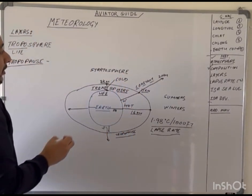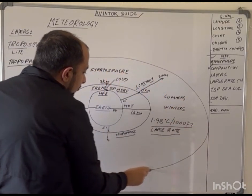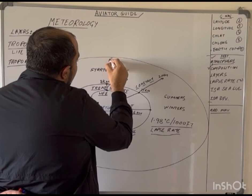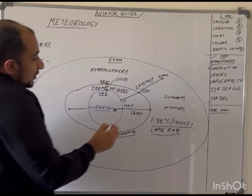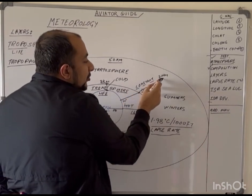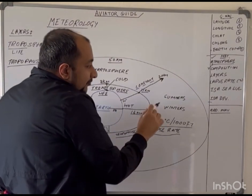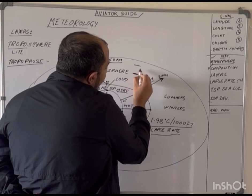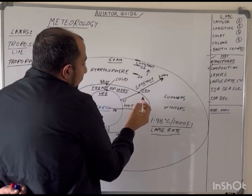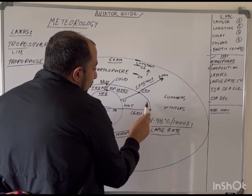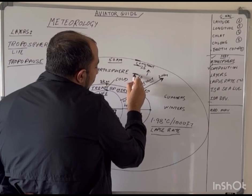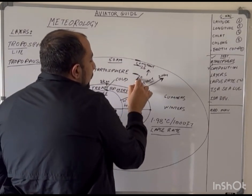Flying happens mostly in the troposphere. The next layer after the tropopause is known as the stratosphere, which extends up to 50 km in total from the Earth's surface. In it, the temperature is constant up to 20 km. From 11 km (the tropopause) to 20 km, the temperature is constant — there is no lapse rate. After 20 km, approximately from 20 km to 25 km, the temperature rises.